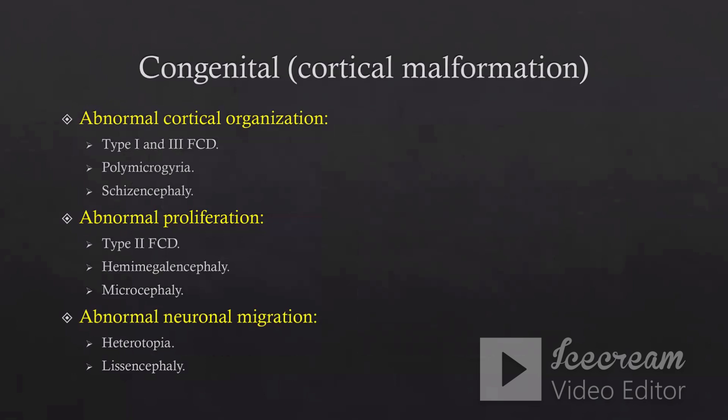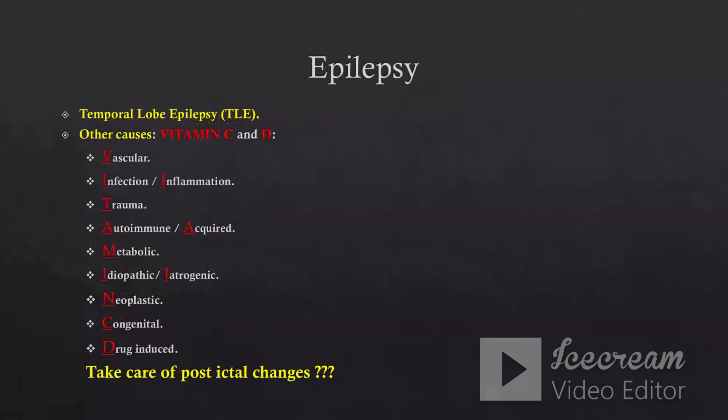Regarding the congenital causes, we will not discuss in more depth because I think this will take a separate session. But we need to focus on what causes cortical malformation: either abnormal cortical organization — this would include type 1 and type 3 focal cortical dysplasia, polymicrogyria, schizencephaly. We have also abnormal proliferation — type 2 focal cortical dysplasia, hemimegalencephaly, microcephaly — and abnormal neuronal migration, including heterotopia and lissencephaly. These are our algorithms or our approach in dealing with these cases.